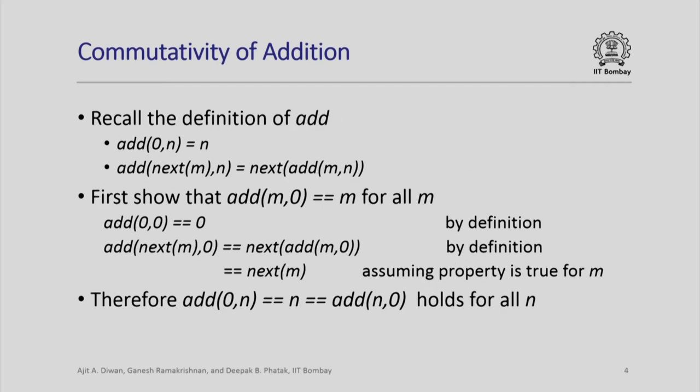We have defined add(0, n) = n, and add(next(m), n) = next(add(m, n)). This is not the same if you replace m by n — it gives a different thing. So just by looking at this, it is not obvious that add(m,n) equals add(n,m), but let us try to prove it.